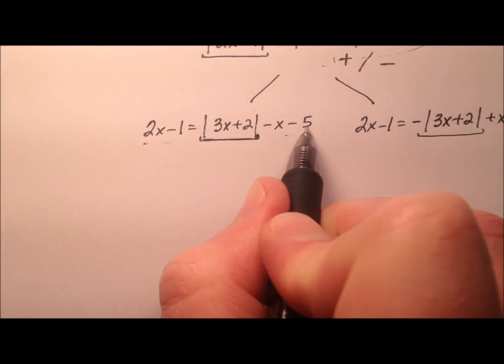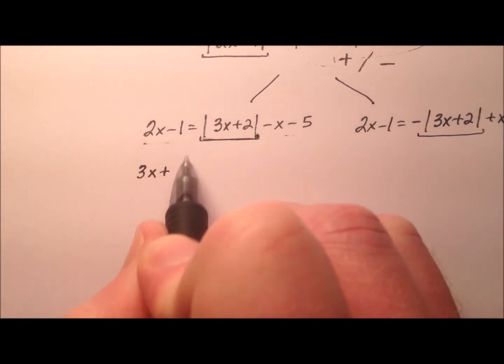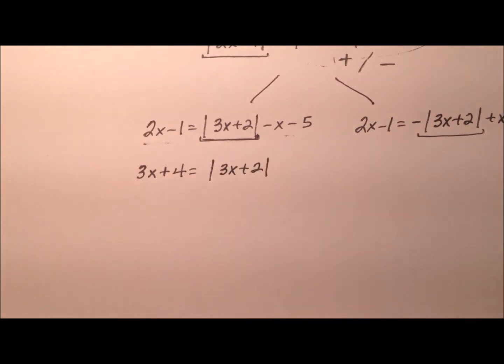So let's add x and add 5 to both sides. So I'll have, let's see, 3x plus 4 equals the absolute value of 3x plus 2. Let's go ahead and switch these two sides using the symmetric property of equality just so we can see our absolute value term on the left.